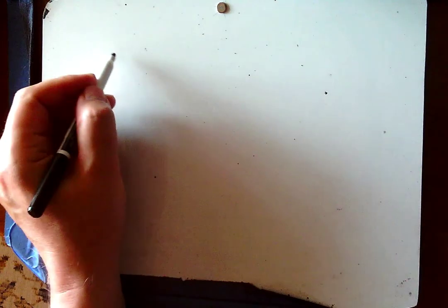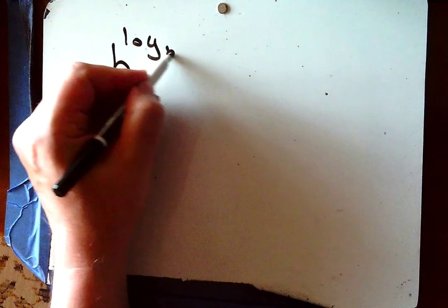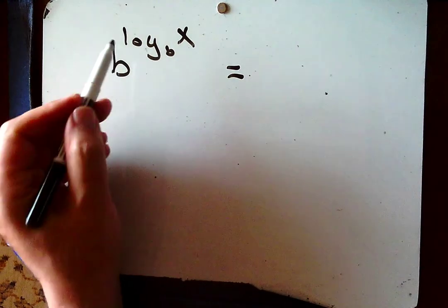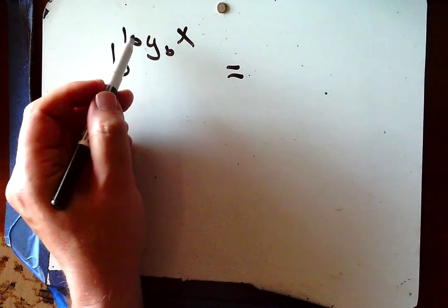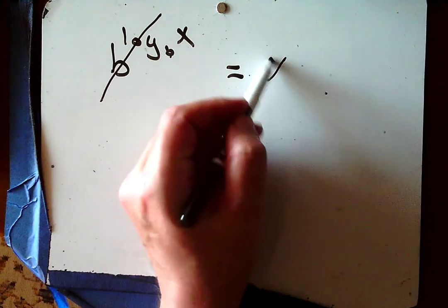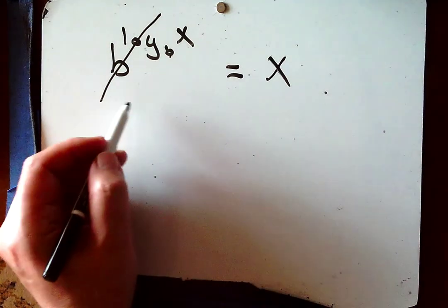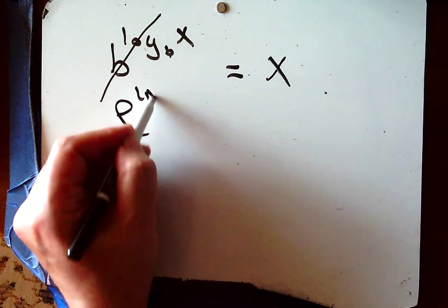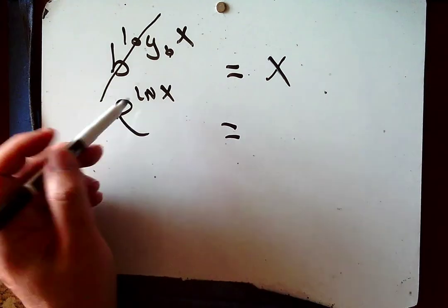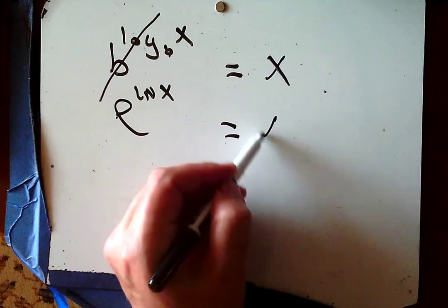Logs and exponentials are inverses of each other. So b to the power of log base b of x — these cancel each other out and give x. Likewise, e to the power of ln of x — these cancel and give x.